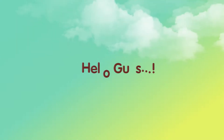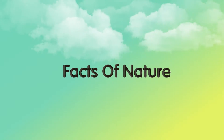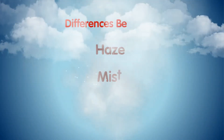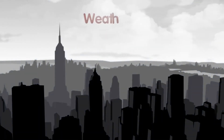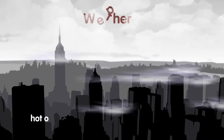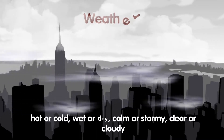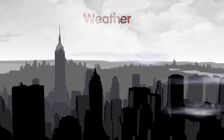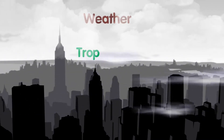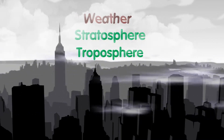Hello guys, this is our channel Facts of Nature. Today we are going to see the differences between haze, mist, and fog. Generally, weather is the state of the atmosphere describing, for example, the degree to which it is hot or cold, wet or dry, calm or stormy, or clear or cloudy. On Earth, most weather phenomena occur in the lowest level of the planet's atmosphere, the troposphere, just below the stratosphere.